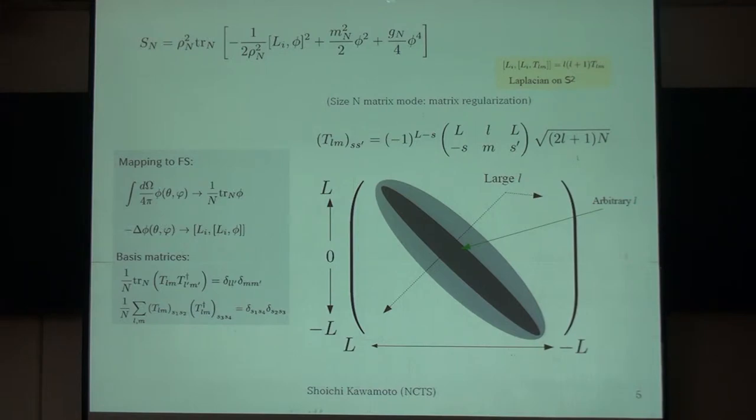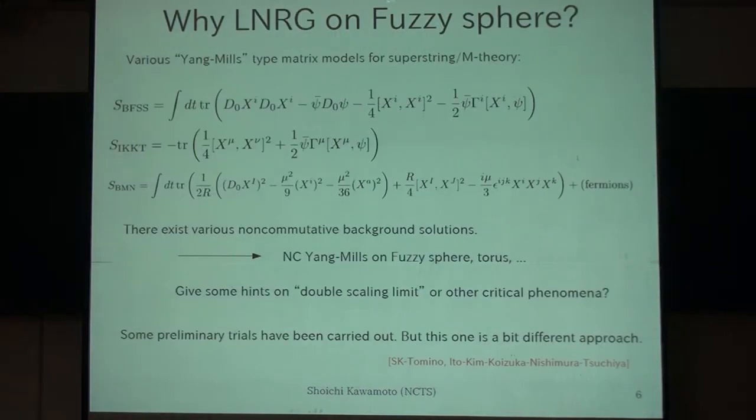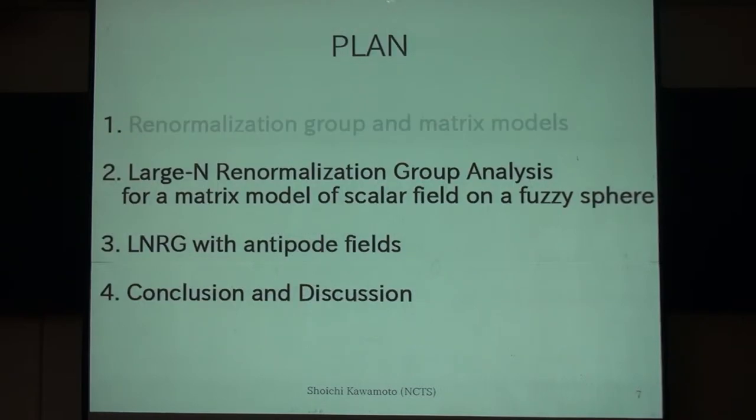And one of the motivations to think about this kind of study is that, for example, similar to the IKKT model, there are various types of supersymmetric matrix models, and it may provide another approach to analyze this matrix model, because many of them admit some non-commutative background solutions, for example. In some solutions, they give us a non-commutative field theory on fuzzy spheres and so forth. So this kind of RG has some starting point on this kind of analyzing matrix models.